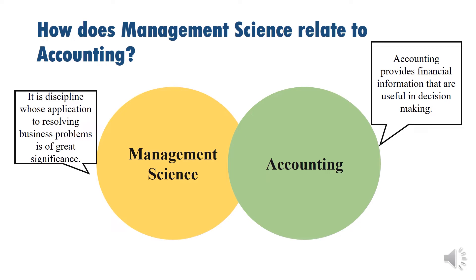For example, if there was a problem in operation such as overstocking of inventory, Accounting could provide inventory records while Management Science can help resolve the problem. Or if there were excess funds and management wants to know how to earn more on investment, Accounting can provide information about cash flow while Management Science can help management decide what investment to make with the excess money. There is truly an interrelationship between Management Science and Accounting.